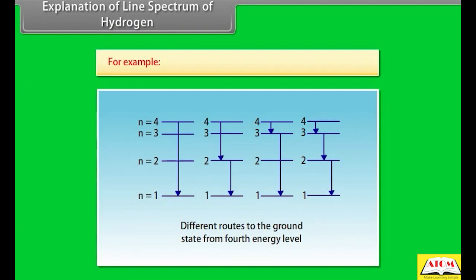For example, consider the electron present in the fourth energy level (n = 4) of different hydrogen atoms. In some atoms, it may come directly to ground state (n = 1). In others, it may first jump to the second energy level (n = 2) and then to n = 1. In still others, it may come to ground state via the third (n = 3) and second (n = 2) energy levels.